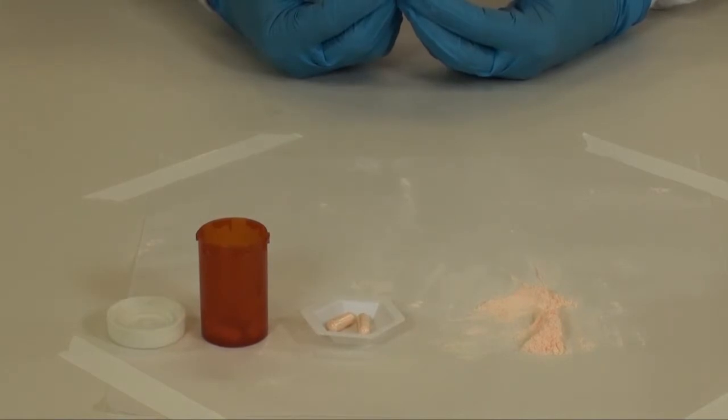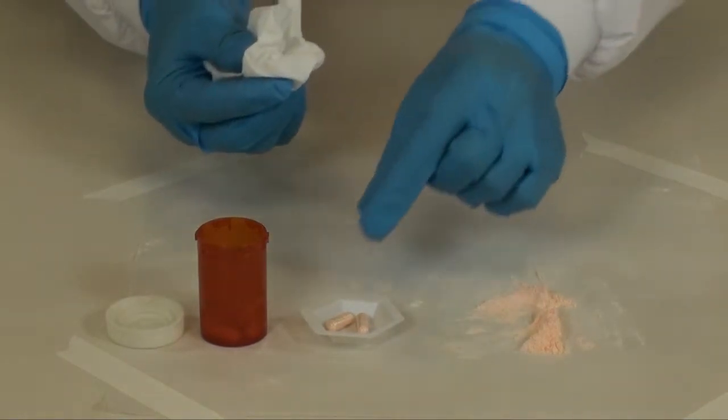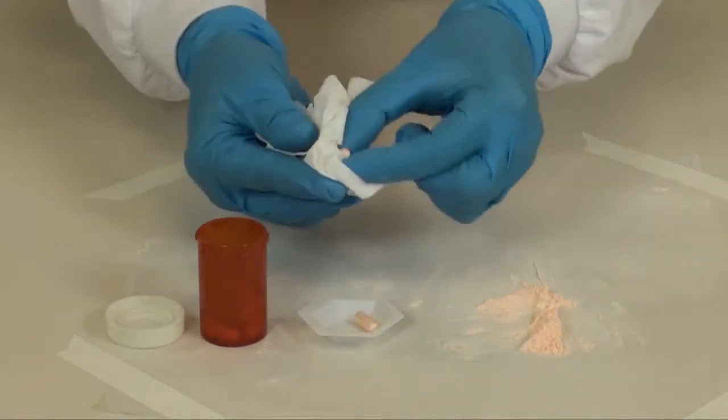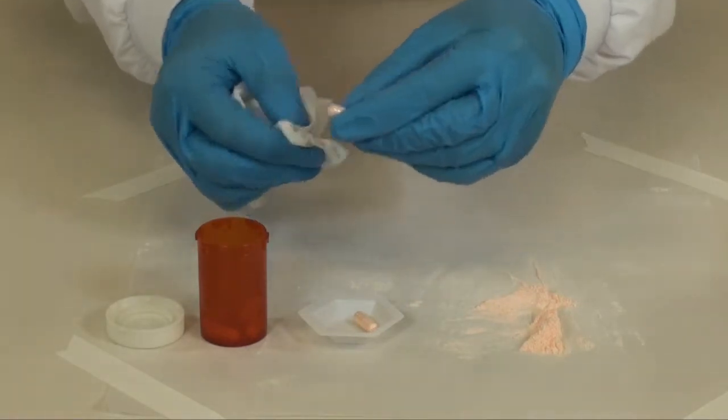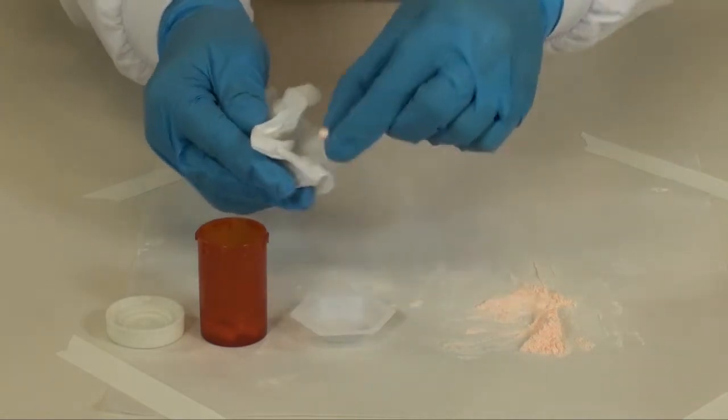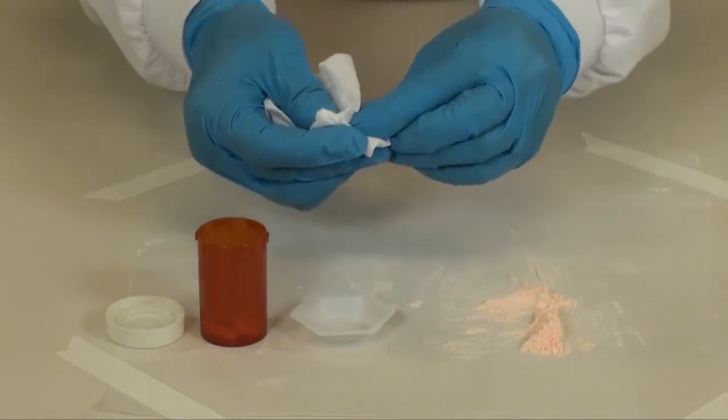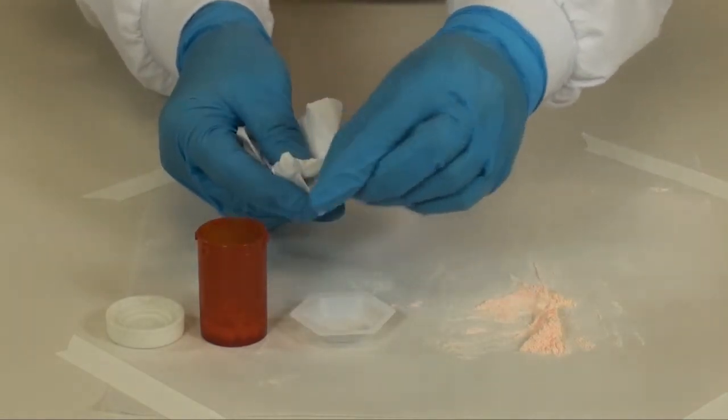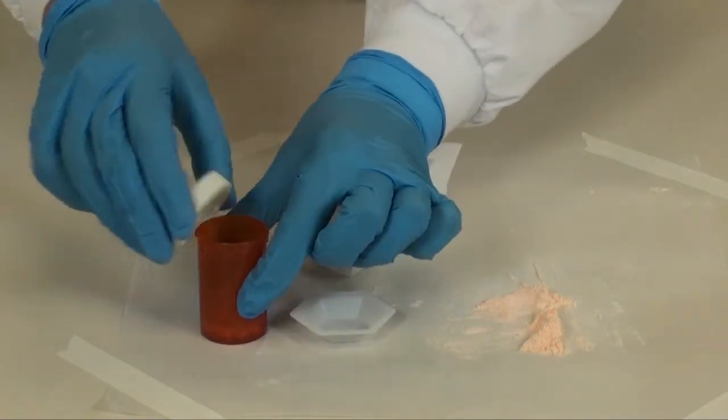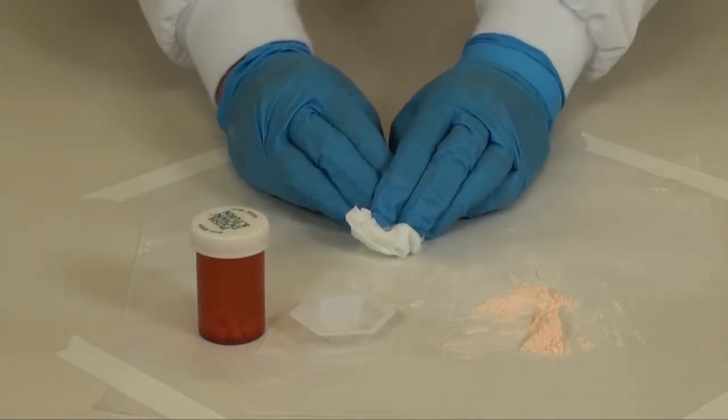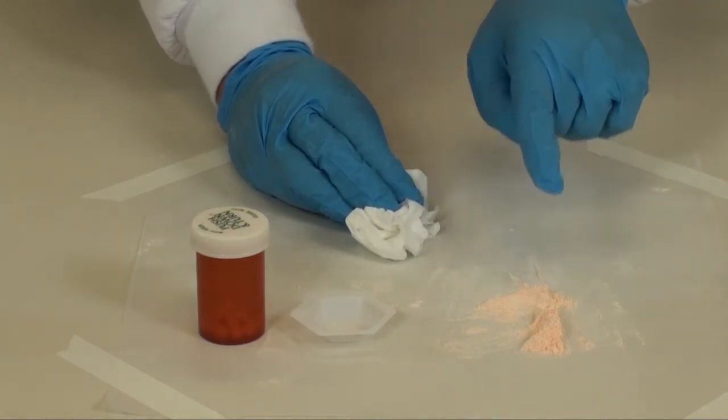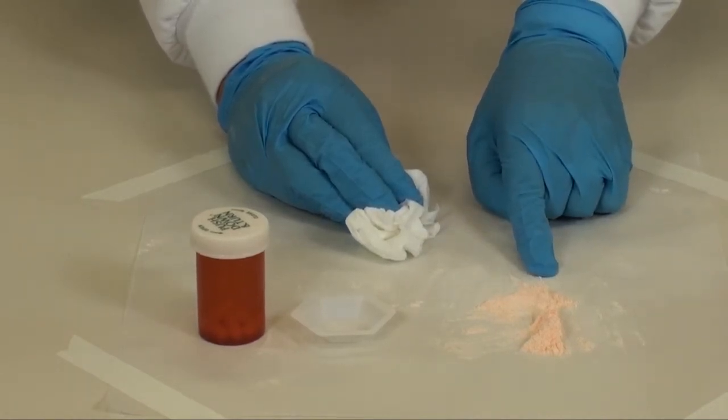You will need to polish your capsules prior to dispensing. Take a soft cloth, Kleenex, or chem wipe, and remove the excess powder from the capsules to shine them. Go ahead and cap your prescription bottle. It is now ready for dispensing. Remember to dispose of your excess powder appropriately.